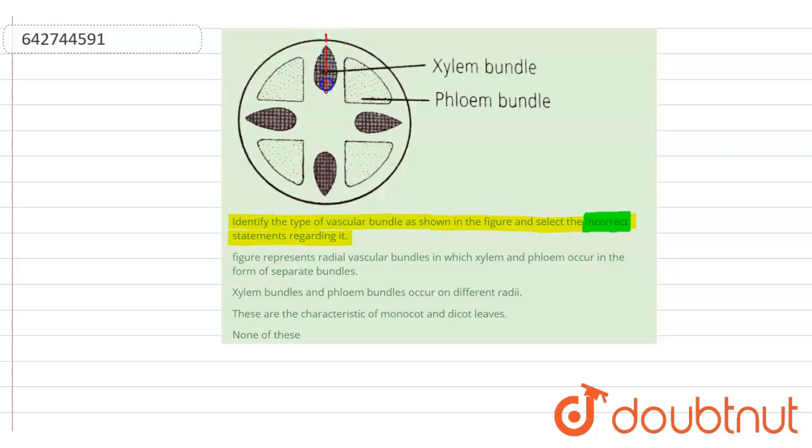What we can see here is xylem exists on different radii. So this is my xylem bundle. On the other hand, phloem exists on a different angle altogether, so phloem bundle is on different radii. Let's see the statements.